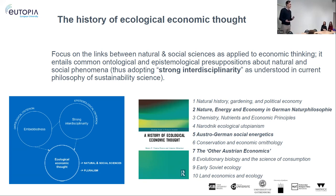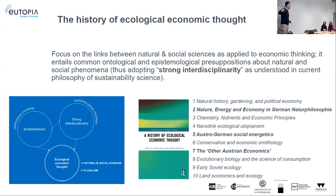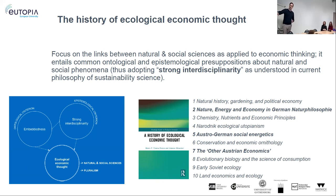The second criterion is strong interdisciplinarity — avoiding any fundamental contradiction between the natural and social sciences. This sounds obvious, but it is not what we observe. There are many strands of thought in economics that lead to fundamental contradictions with what natural sciences tell us. Take the concept of endless economic growth — can there be endless growth on a finite planet? This is still in any Economics 101 textbook. We need to build common ontological and epistemological presuppositions, and combining these two criteria is what we mean by ecological economic thought.